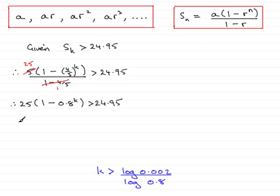What I'm going to do next is not expand the bracket but divide both sides by 25. So if I divide this side by 25, I'm left with 1 minus 0.8 to the power k. And if I divide the other side by 25, you can do it on a calculator, you end up with 0.998.